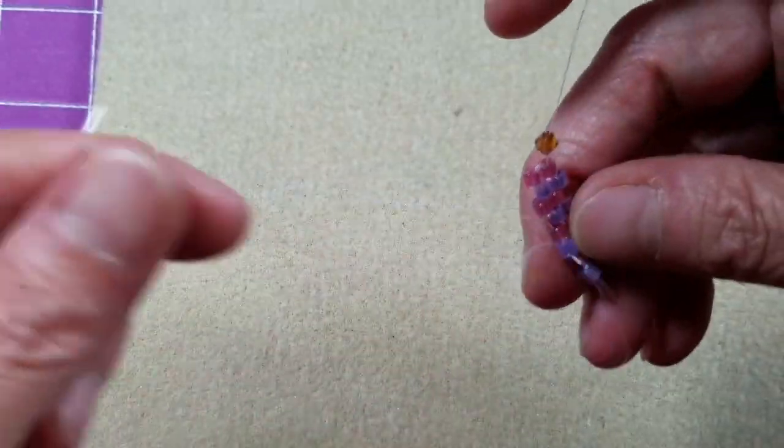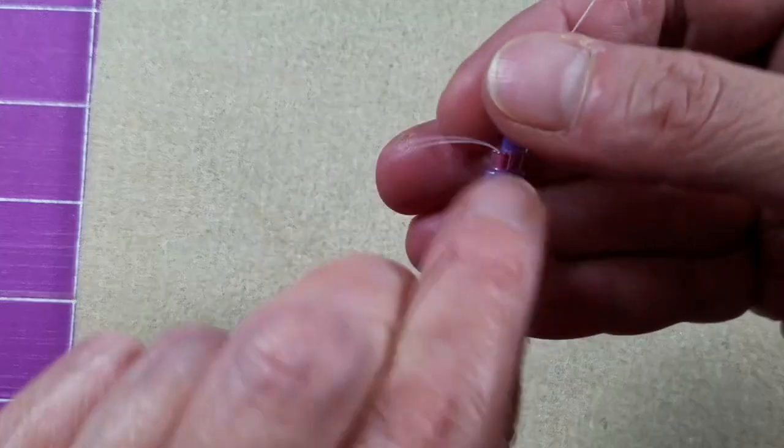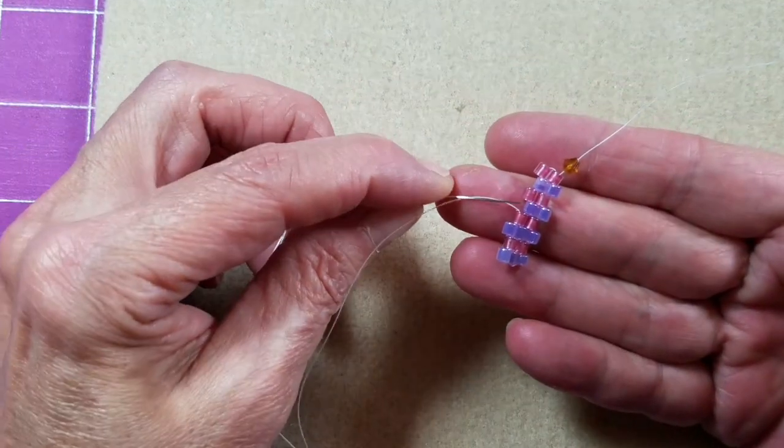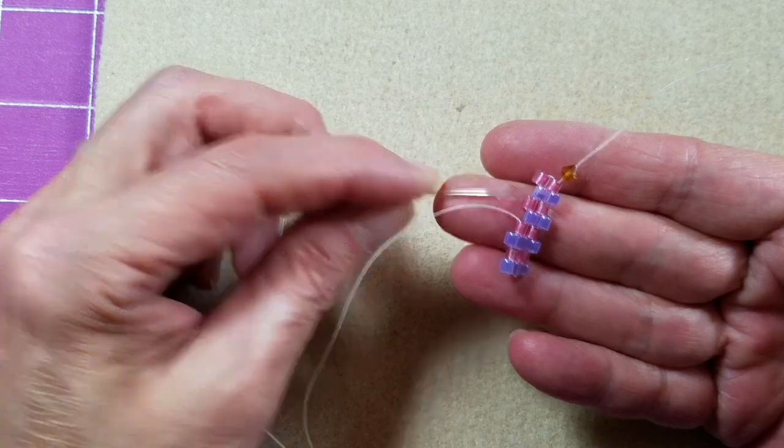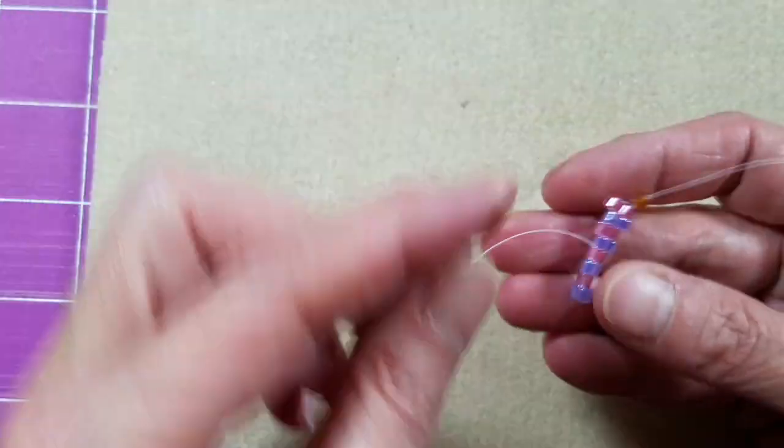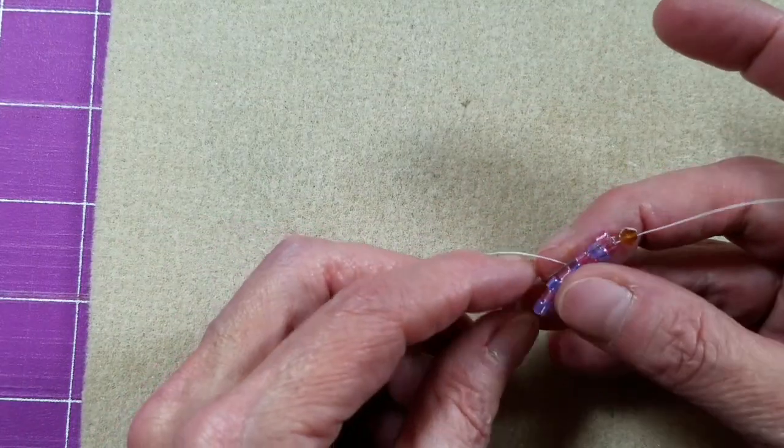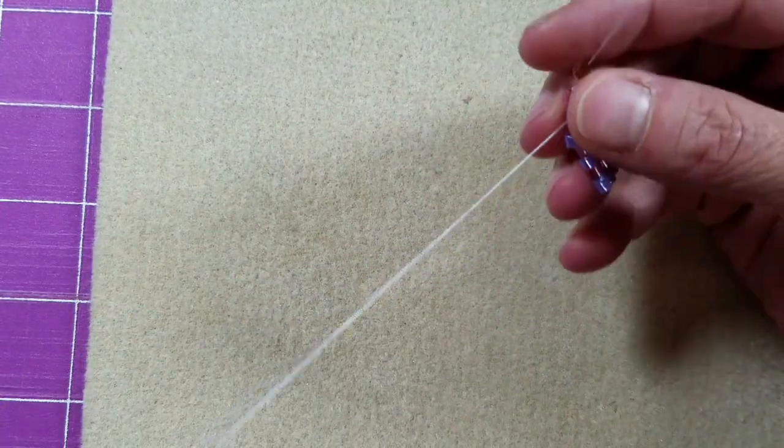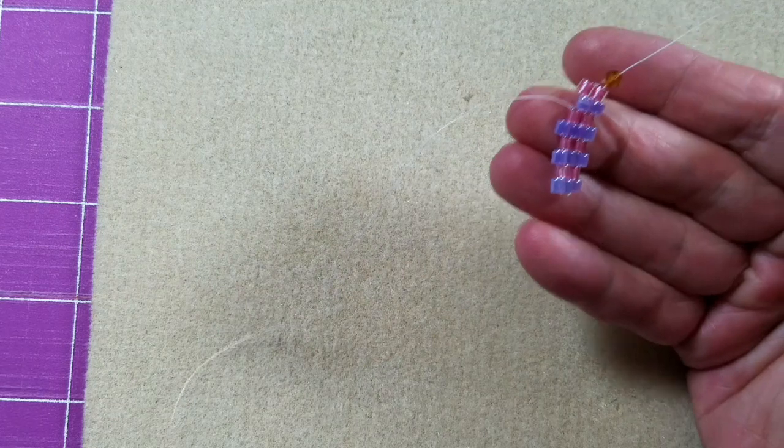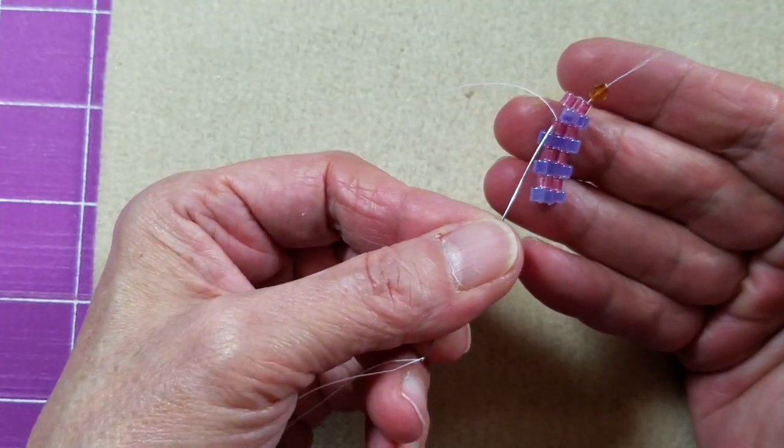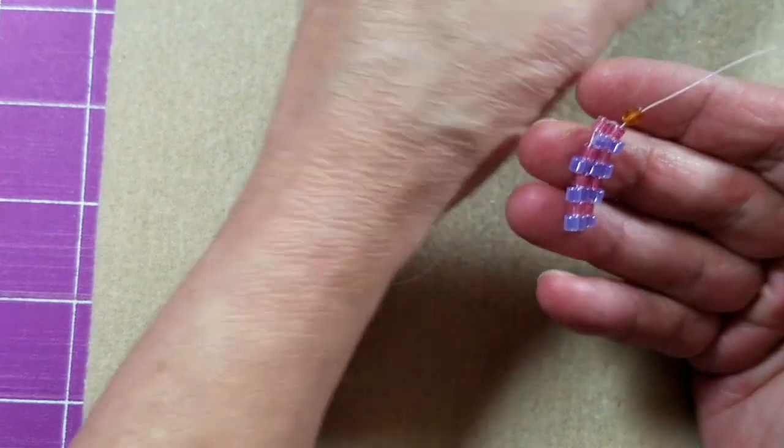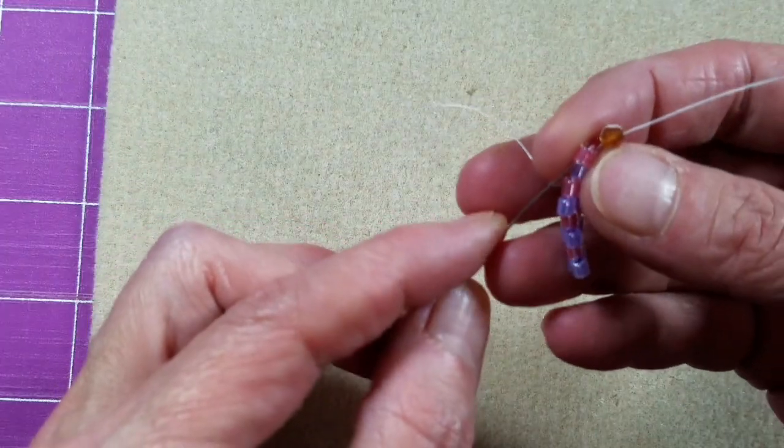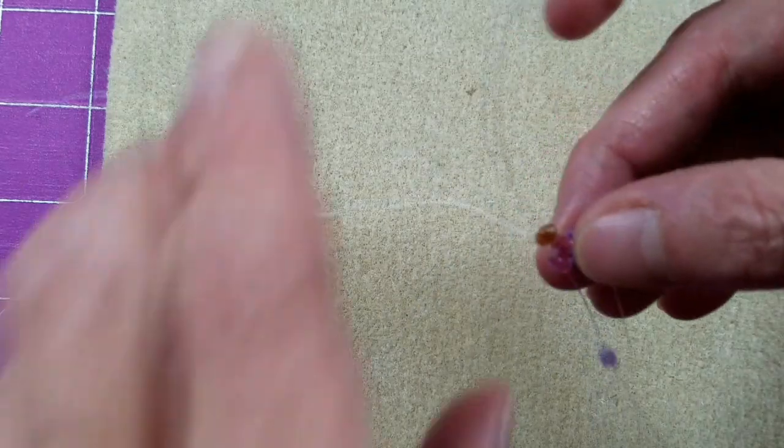For all the different variations of peyote except for two count or two drop and three drop, you're basically going to skip over the next one and go through the one that's poking out. That's whether you're doing even count, odd count, flat, circular or tubular. Now we're coming out of the pink bead here, we need to add one last purple bead. We'll pick it up, skip that purple bead and come through the pink bead at the top that's sticking out.